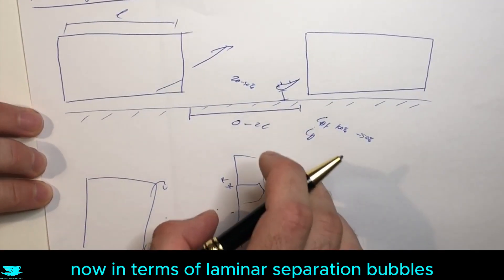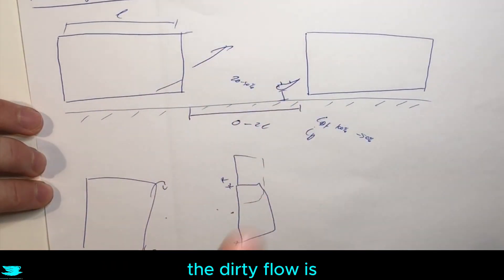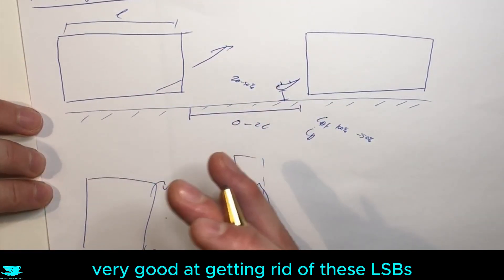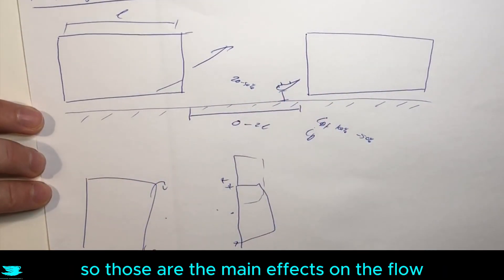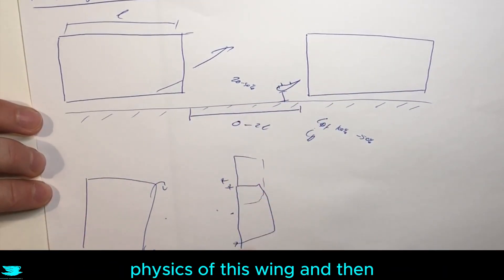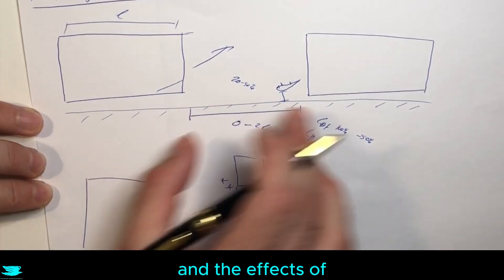Now in terms of laminar separation bubbles, which are a very common phenomenon, the dirty flow is very good at getting rid of these LSBs because they transition the flow much sooner. So those are the main effects on the flow physics of this wing.